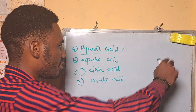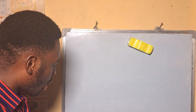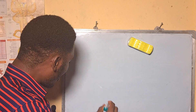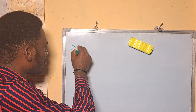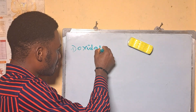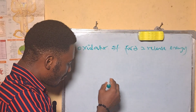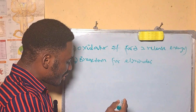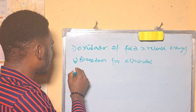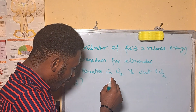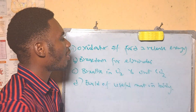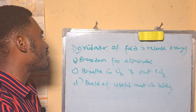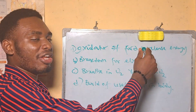Our next question: the significance of respiration is — A: oxidation of glucose to give us energy, B: breakdown of waste material for elimination, C: breathing in oxygen and breathing out carbon dioxide, D: build up of food material in the body. The answer is A — respiration is concerned with oxidation of food material to give us energy for metabolic activities.